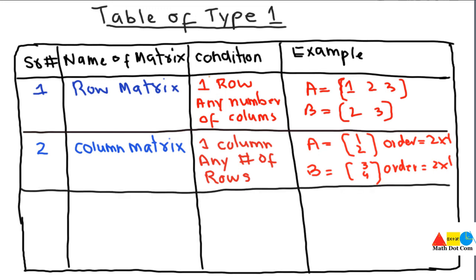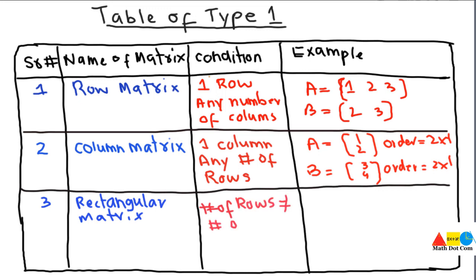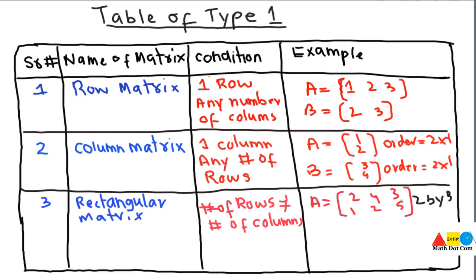The next type is the rectangular matrix. The condition required is that the number of rows must not be equal to the number of columns. When the number of rows is not equal to the number of columns, the matrix is considered a rectangular matrix. For example, a matrix of order 2×3 is rectangular because 2 (rows) and 3 (columns) are not equal.